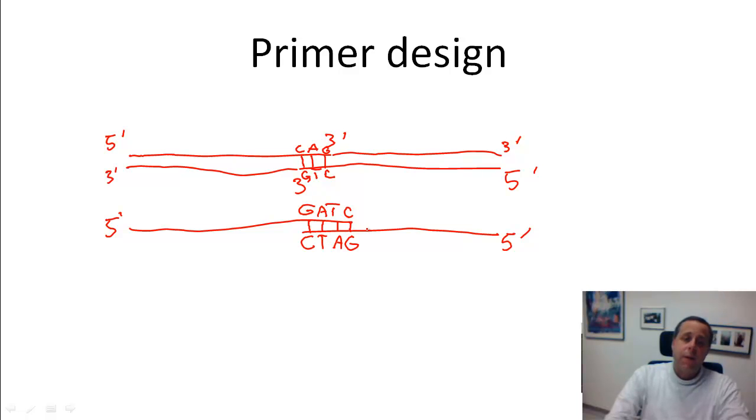So two copies of the same primer will dimerize again in that way, will anneal to each other and will then be filled, and this again will compete with the real PCR product that you want to get. So that's something that you need to avoid, and if accidentally it happened to you, just throw them away and get new primers because otherwise the reaction won't work properly.